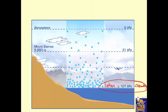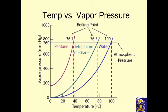As you go higher, less gas means less pressure. Way up where there's no gas, there's no pressure. So if you have a liquid trying to turn into a gas, down at sea level it has to have the same pressure from the liquid's evaporated molecules as the atmosphere has in order to boil.